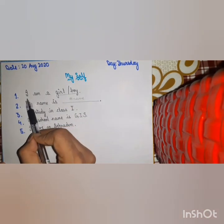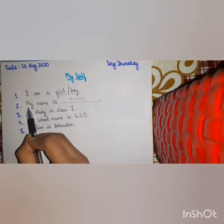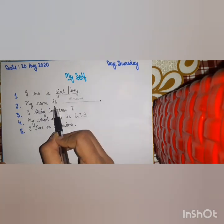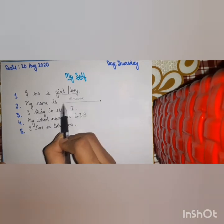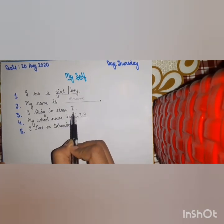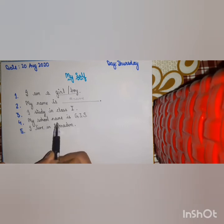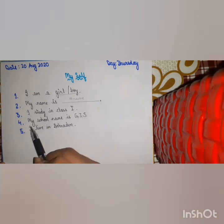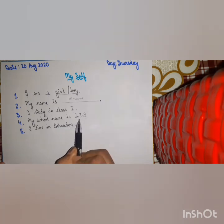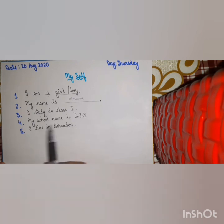Let's revise it once again. One: I am a girl or boy. Two: My name is — whatever your name is, you have to fill it in yourself. Three: I study in class first. Four: My school name is G-I-S, which is the short form of Gyanada International School. Five: I live in Dehradun.